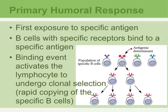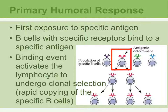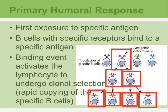The Primary Humoral Response — primary meaning first — is the first time you ever come in contact with a specific antigen. B cells try to bind to that specific antigen, and only one may be able to bind to it. When the one that fits is selected, only that B cell is cloned, which means it copies itself. This is known as clonal selection.